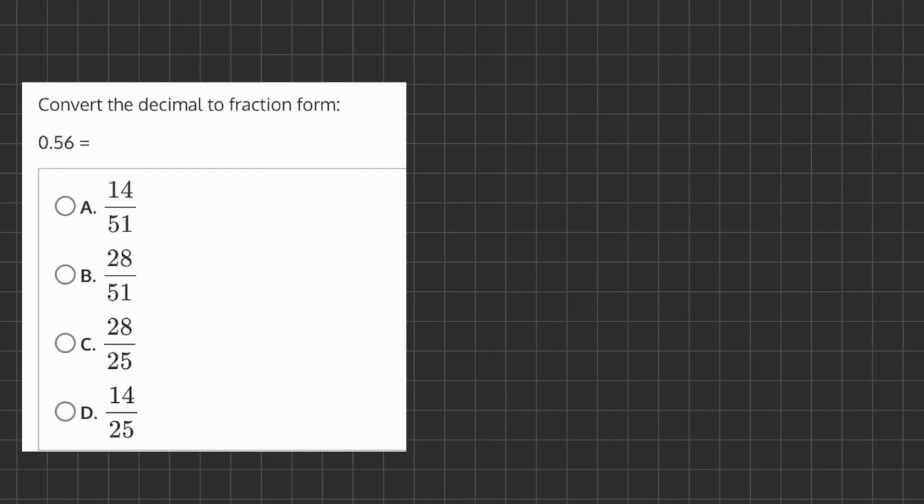All right, so in this problem we want to turn our decimal into fraction form. So we'll take this 0.56 and we want to get rid of this decimal, so we will multiply it by 100 because we want to move it two places to the right, and we'll also have to divide by 100 in order to keep the same value.